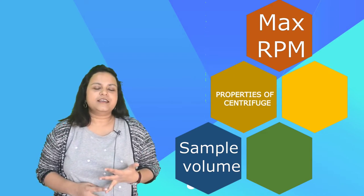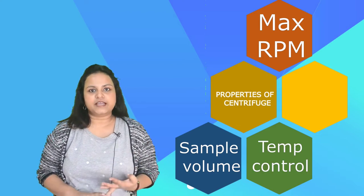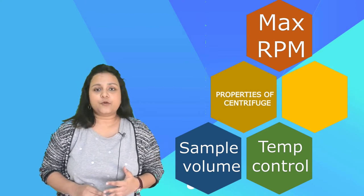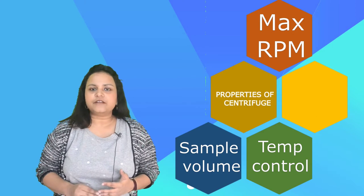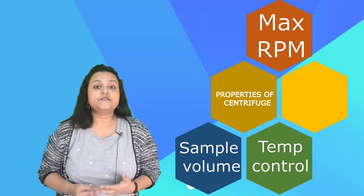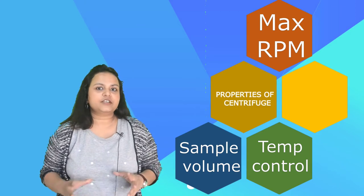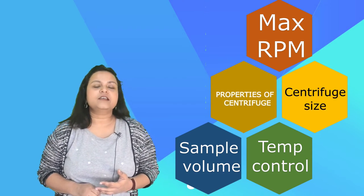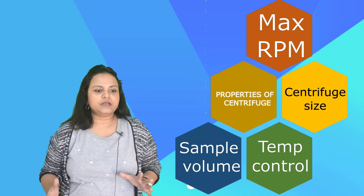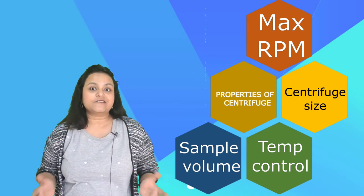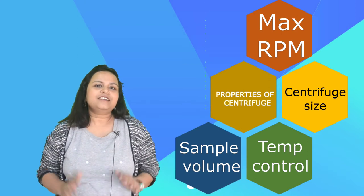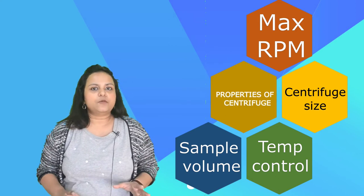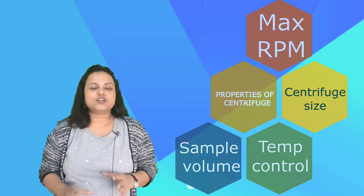The third property is whether there is an option for temperature regulation — that is, whether you can refrigerate your samples during the centrifugal run. This becomes very important if you are using biomacromolecules, because these molecules are often sensitive to higher temperatures and you would want a refrigerated rotor chamber while centrifuging. The fourth important property is the size of the centrifuge — whether it is a large bulky floor-type model installed in a central facility, or a small compact benchtop centrifuge that can be placed close to everybody's workspaces.